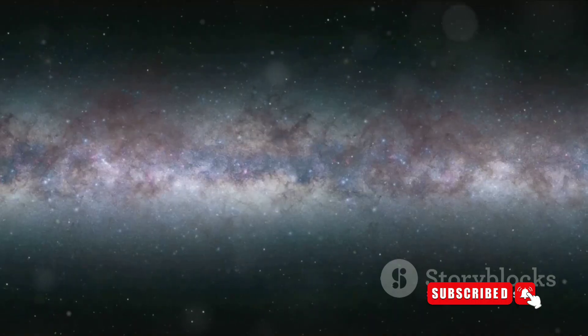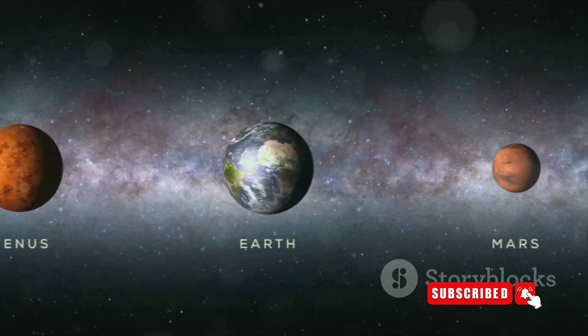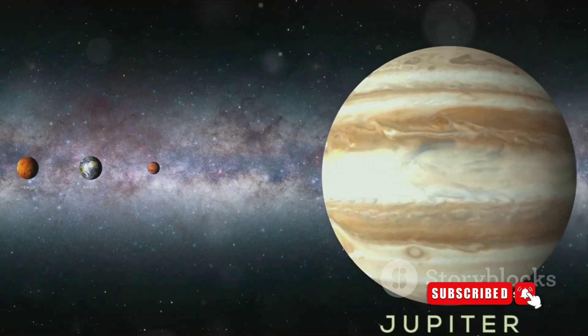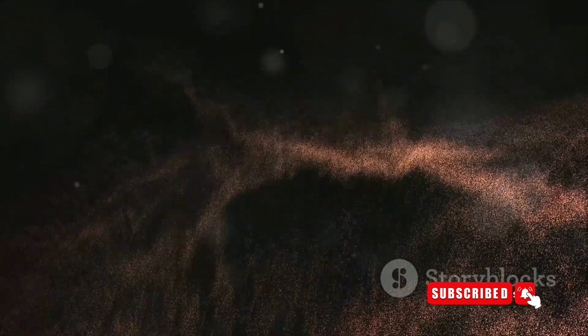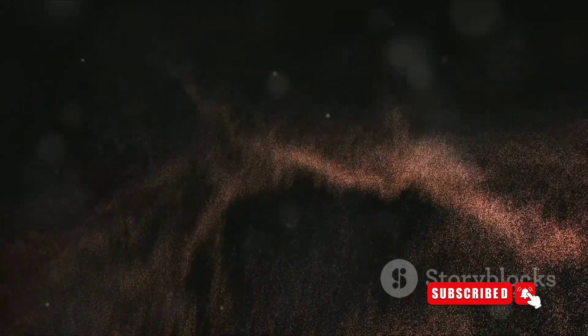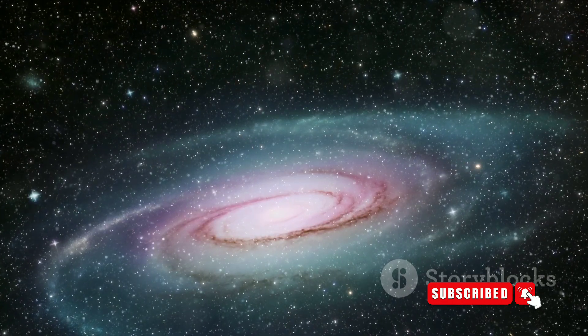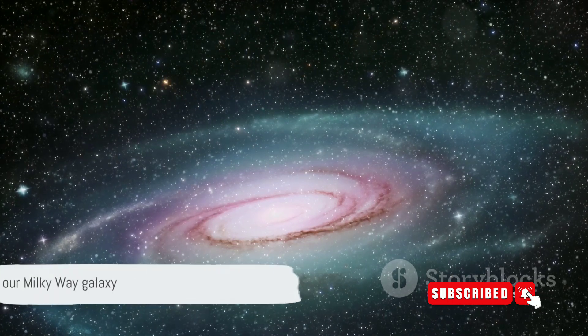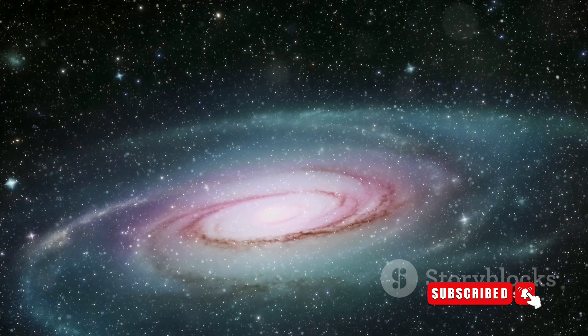Now how does the Milky Way compare to other galaxies in the universe? Well, it's not the biggest, not by a long shot. Andromeda, our closest spiral neighbor, is about twice as large as the Milky Way. The biggest galaxy we know of, IC 1101, is about 50 times larger than the Milky Way. But size isn't everything. Our Milky Way is teeming with life, with a rich history and with mysteries yet to be unraveled. Indeed, the scale of our Milky Way galaxy is truly mind-boggling, a testament to the vastness of the universe.